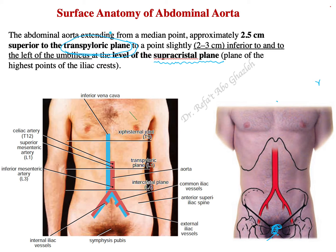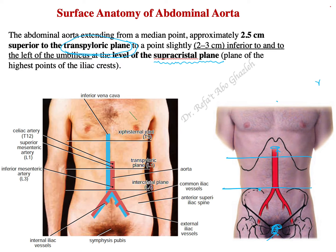Drawing these two planes — the transpyloric plane and the supracristal plane — we can now locate the abdominal aorta. The abdominal aorta starts two to three centimeters superior to the transpyloric plane and terminates at the level of the supracristal plane.